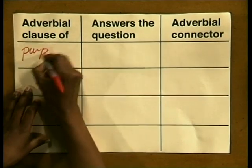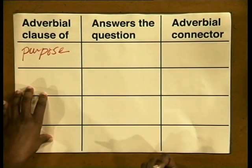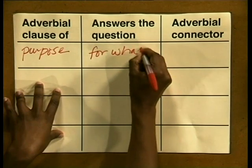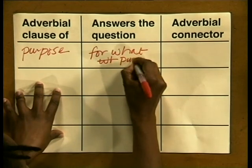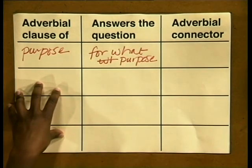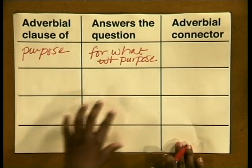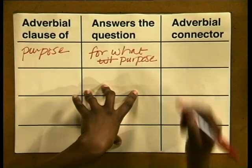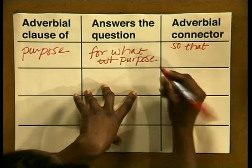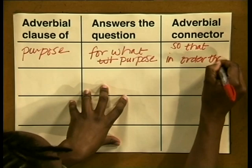A very similar type is the adverbial clause of purpose. It answers the question 'for what purpose,' as opposed to the clause of reason, which answers the question 'why.' Adverbial clauses of purpose are often introduced by the words 'so that' or 'in order that.' Here's a sentence that uses an adverbial clause of purpose: 'I go to school so that I will pass.' Here, the purpose of me going to school is 'so that I will pass.'